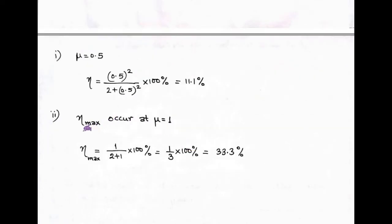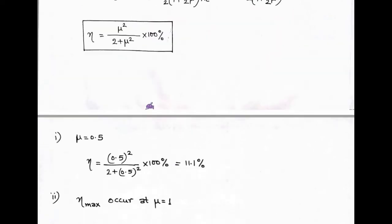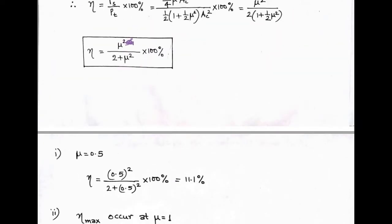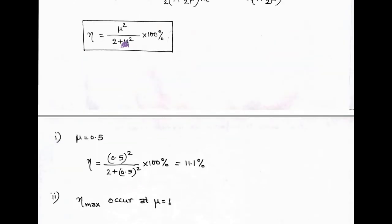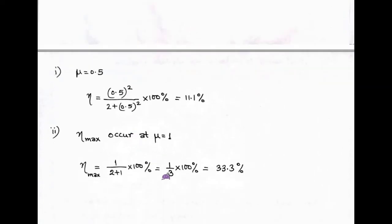In the second part, we have to show that for a single-tone AM, the maximum efficiency is 33.3% at 100% modulation, that is mu equals 1. For this, we again use the formula: efficiency equals mu squared upon (2 plus mu squared) into 100%. In place of mu, we write 1, and after solving, we get 33.3%, which is the maximum efficiency at 100% modulation.